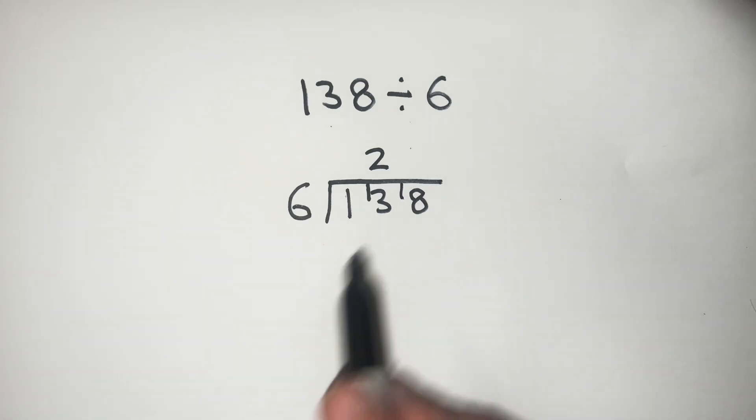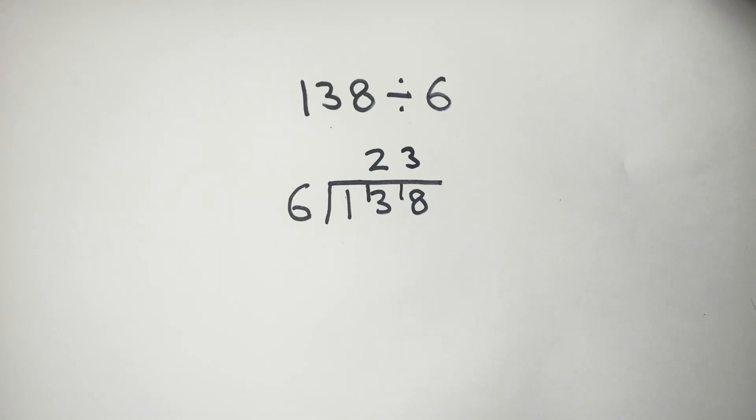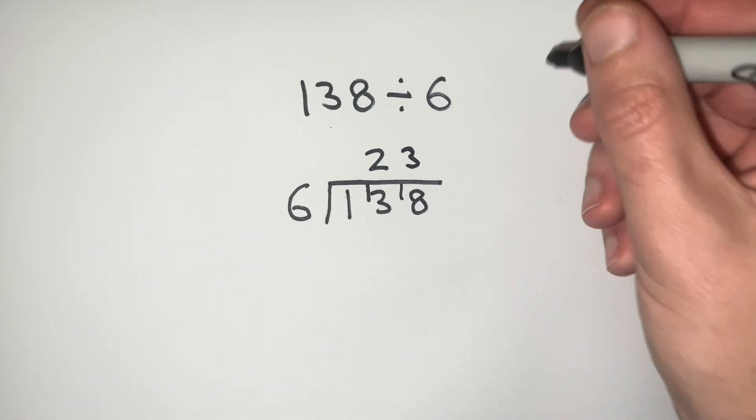We now ask how many 6s go into 18, well that's going to be 3. There's nothing left over, so we get our final answer here of 23.